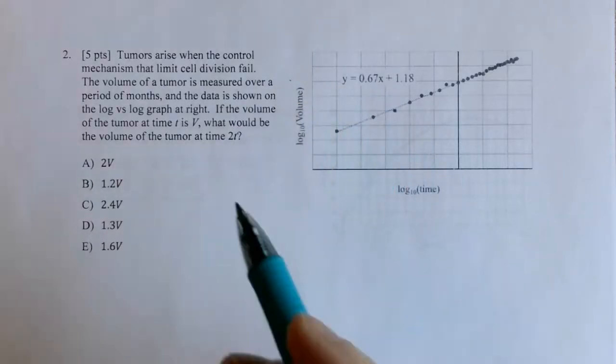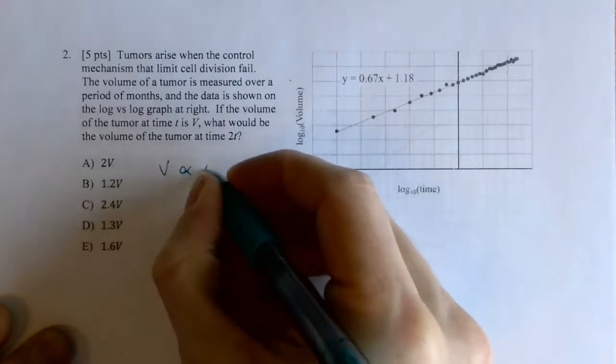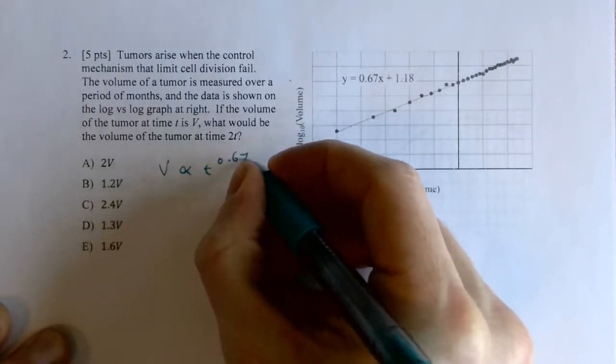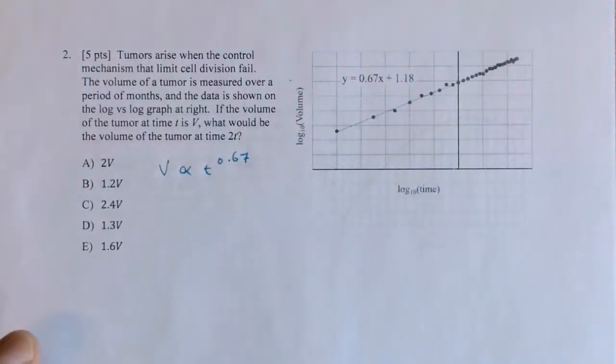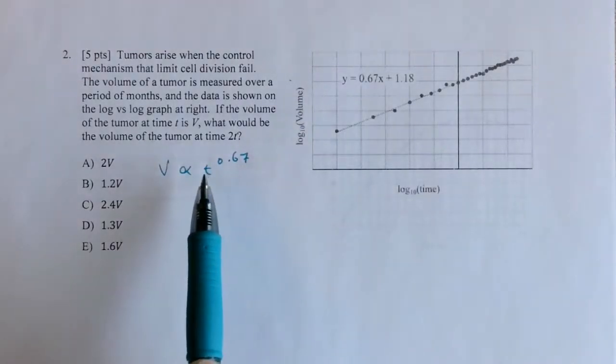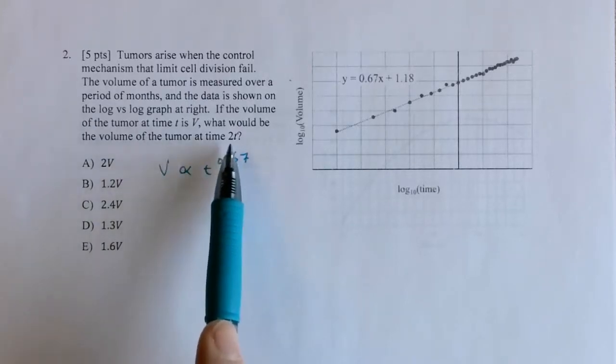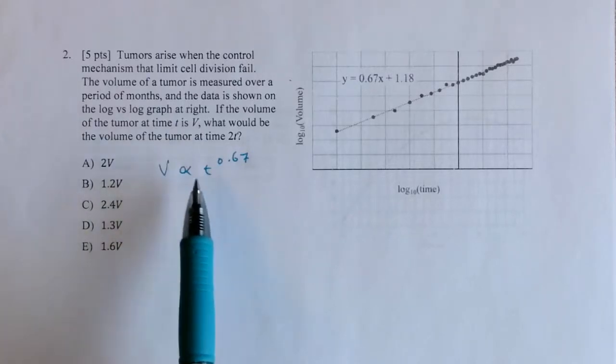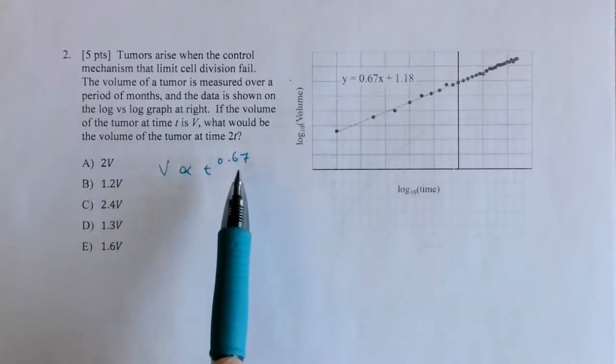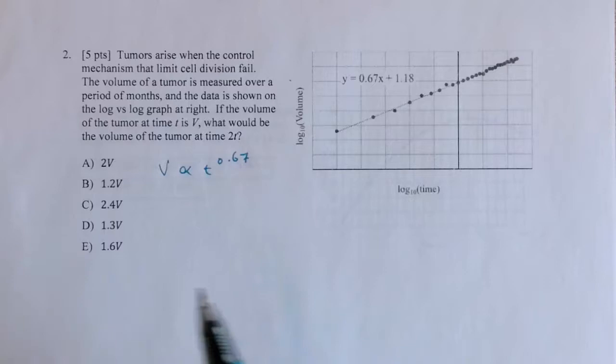So we can tell that the volume scales with time to the 0.67 power. So that means that if whatever factor by which t changes, the volume will change by that factor raised to the 0.67. So if the time were to be doubled, the volume will scale with 2 to the 0.67, which is 1.6. But that's the quick answer, but I'll do a more detailed answer.